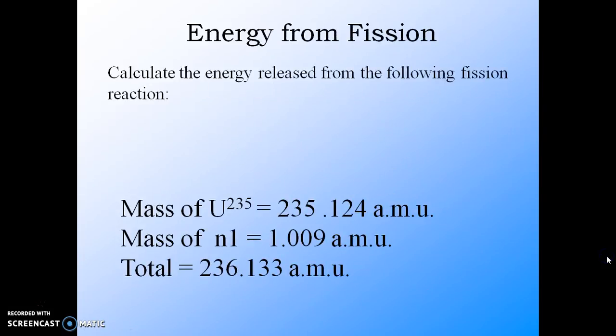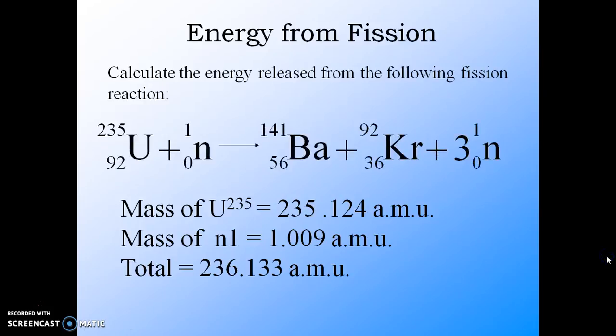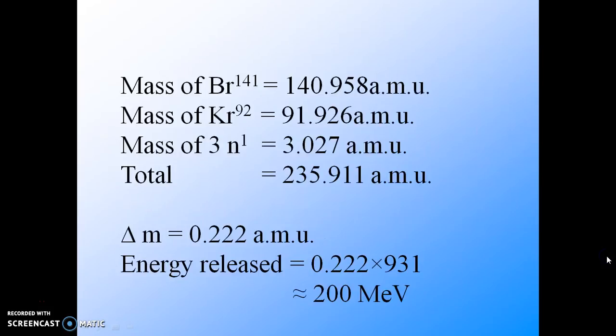Let us calculate the energy released for fission. For example, we consider this reaction: this is the mass of uranium, mass of neutron, this is the mass of barium, krypton, and three neutrons. So we get the mass defect of 0.222 atomic mass units, and the energy released is approximately 200 mega electron volts.